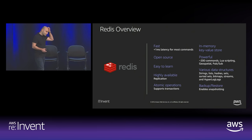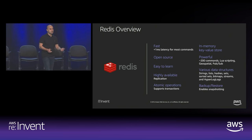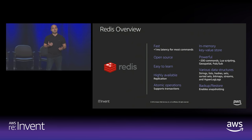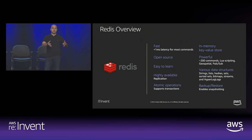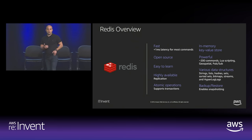Where it gets really interesting is the additional data structures. If you're a developer building applications, a lot of these are familiar to you — whether you're using a list, a hash map, a set, or a sorted set. You no longer have to think about how to serialize the data structure from your application; you can persist that structure directly into Redis and operate on it, eliminating a lot of lines of code.